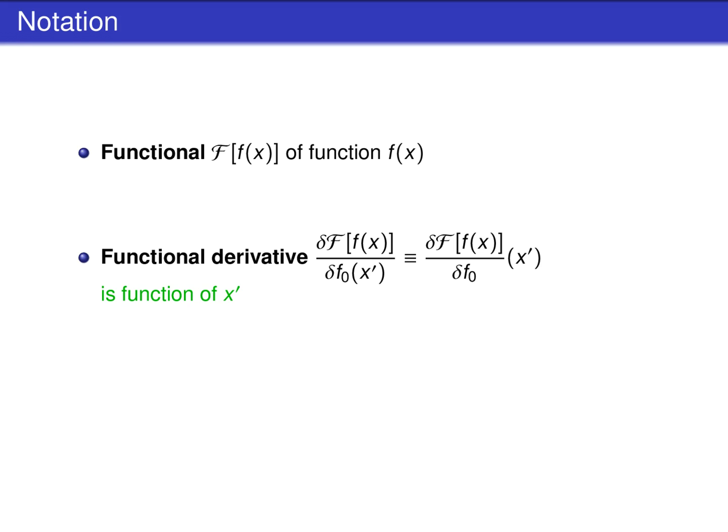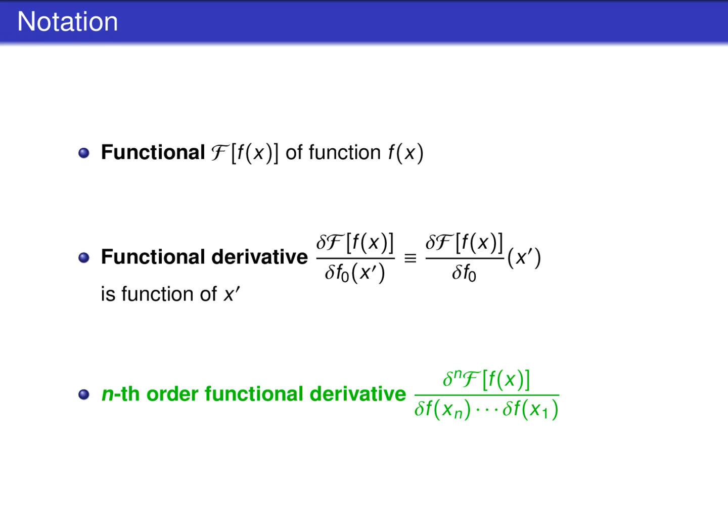An important property of functional differentiation is that it makes functionals into functions. If a functional is derived with respect to a function f of x', the functional derivative is a function of x'. The notation for higher-order functional derivatives is analogous to higher-order derivatives of functions. A functional derivative of order n is a function with n arguments. In all expressions shown here, the variable x can be a vector.